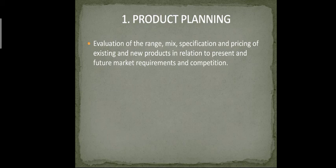The product range covers A to Z, with mix and specification changes — for example, correct phone specifications and pricing. Product planning looks at future market requirements and how the product meets those requirements. The first step is product planning.